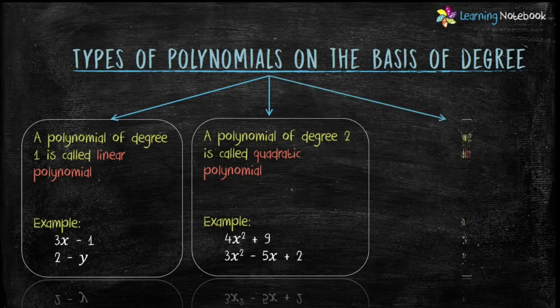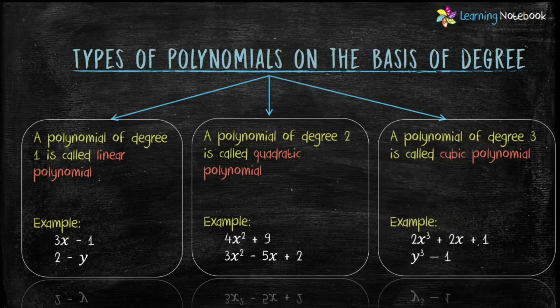The last is cubic polynomial. A polynomial of degree 3 is called a cubic polynomial. For example, 2x cubed plus 2x plus 1 and y cubed minus 1 are cubic polynomials because their degree is 3.